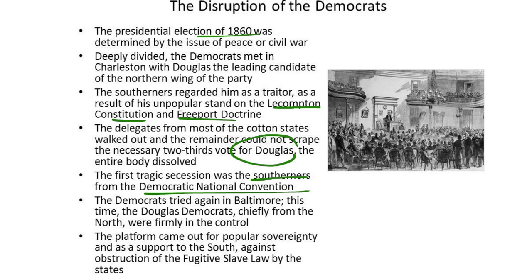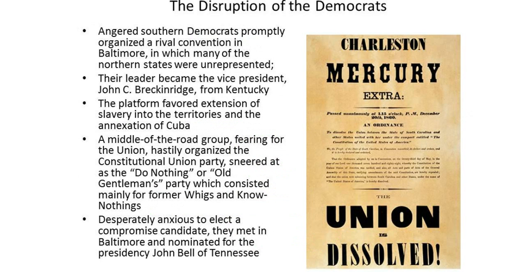The Democrats tried again in Baltimore. This time the Douglas Democrats, chiefly from the North, were firmly in control. The platform came out for popular sovereignty as a support to the South against obstruction of the fugitive slave law by the states. Anchored Southern Democrats promptly organized a rival convention in Baltimore in which many of the northern states were unrepresented. Their leader became Vice President John C. Breckinridge from Kentucky.